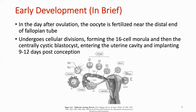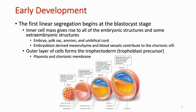So let's briefly review early development in order to put things in context and to start to understand what we are seeing. Starting at the very beginning, in the day after ovulation, the oocyte is fertilized near the distal end of the fallopian tube. It undergoes cellular divisions as it travels down the fallopian tube, forming the 16-cell morula, which then undergoes cavitation to form a centrally cystic blastocyst that enters the uterine cavity and implants into the superficial endometrium at about 9 to 12 days post-conception.